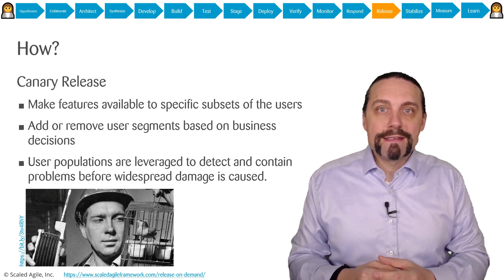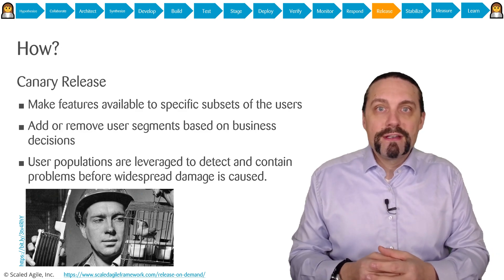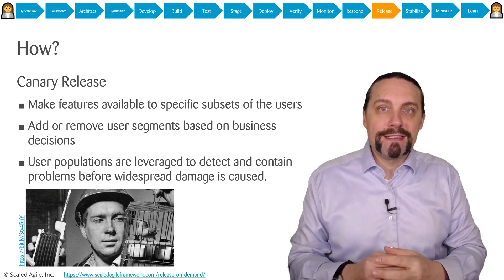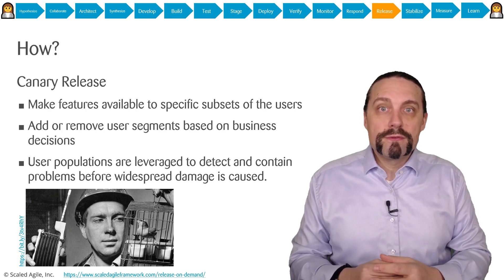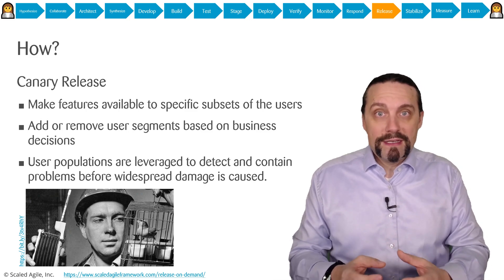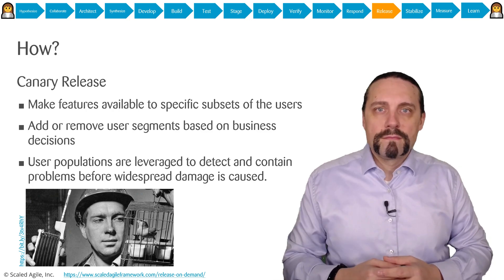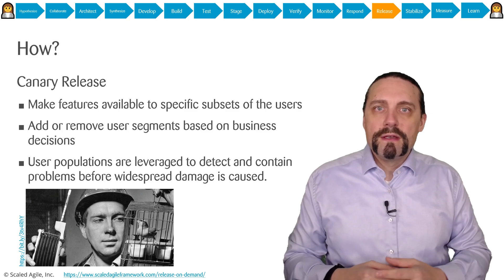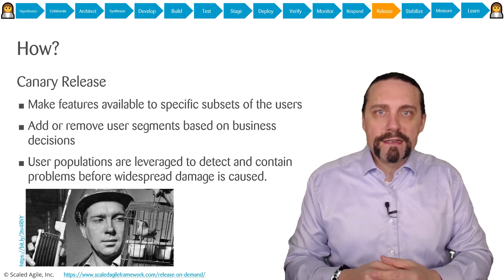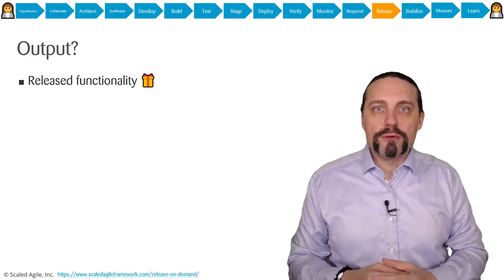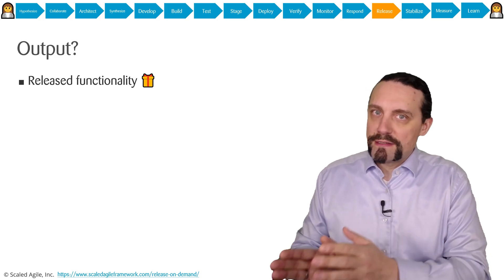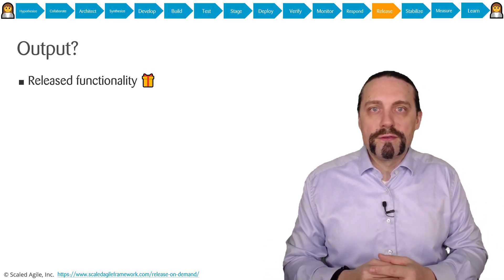The term canary release comes from the canary bird used by miners in the old days. They used the canary bird to go into the mines, and if the canary bird died they knew they needed to get out. Canary releases are commonly used — you may also have heard the terms alpha tester, beta tester, or friends and family release. The output of the release step is the releasing of functionality to a subset of users or to all of the users.